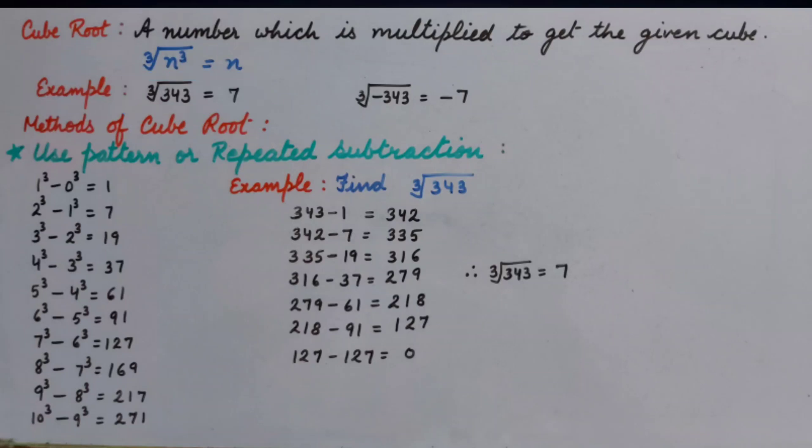Because we know cube of 7 is 343. Similarly, cube root of minus 343 is minus 7.